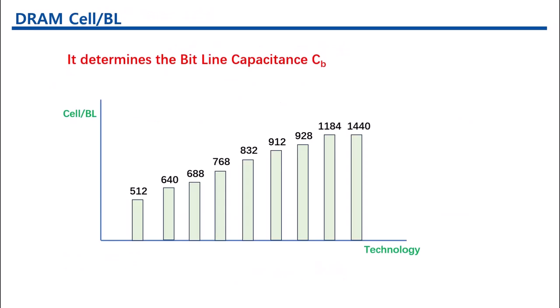To have a reasonable charge sharing result, the cell per bit line is important. As the DRAM technology evolved, the cell per bit line increased.